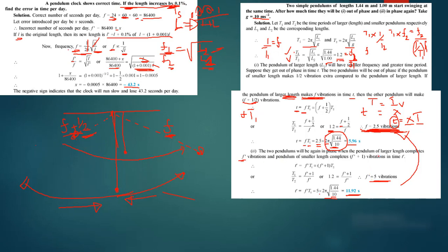Remember that in solving all these time periods, we used the time period of the longer string because F was associated with the longer length. If you used the shorter string's time period instead, you would multiply by the vibration count for the shorter string. The concept is the same either way. Thank you.